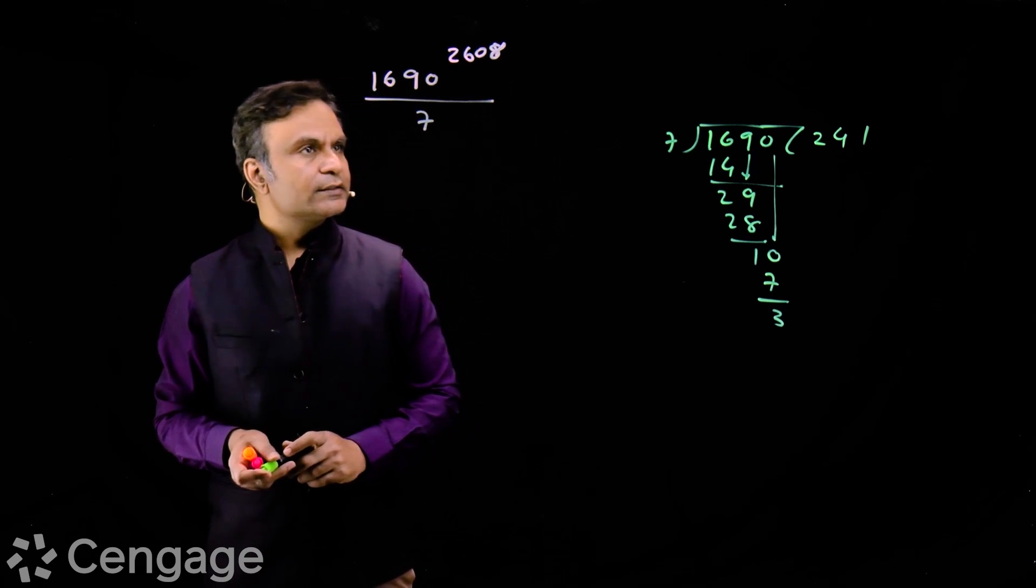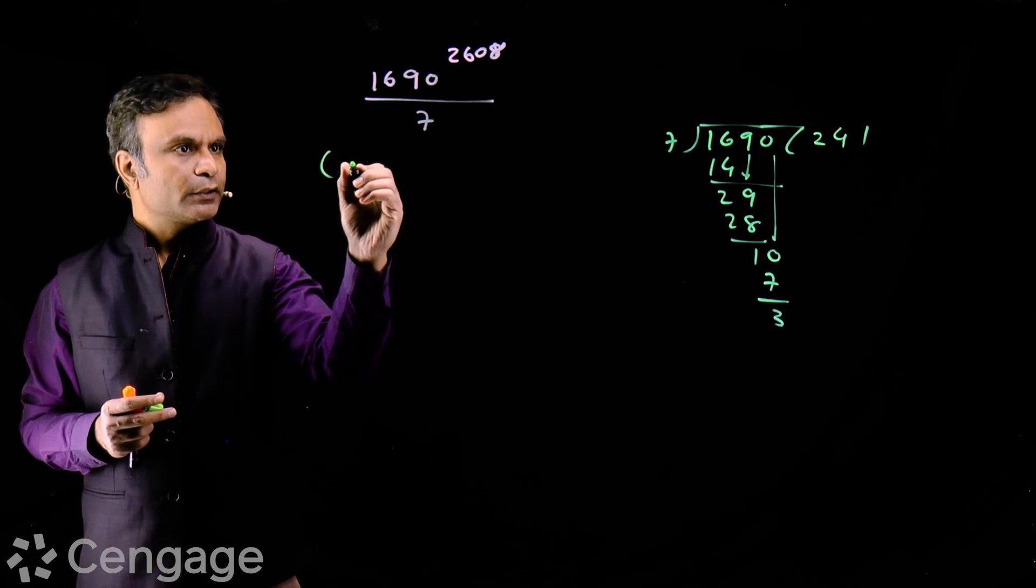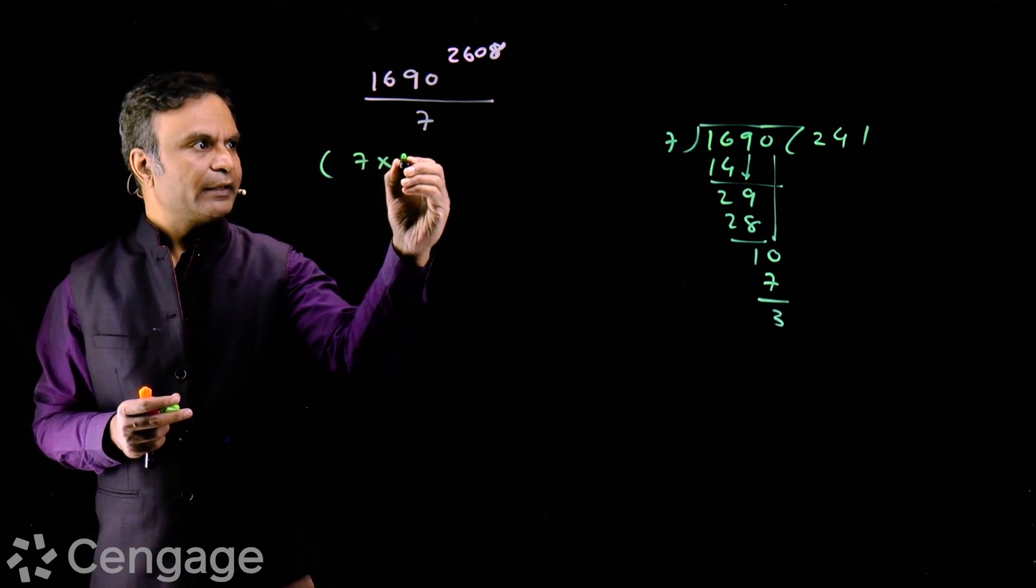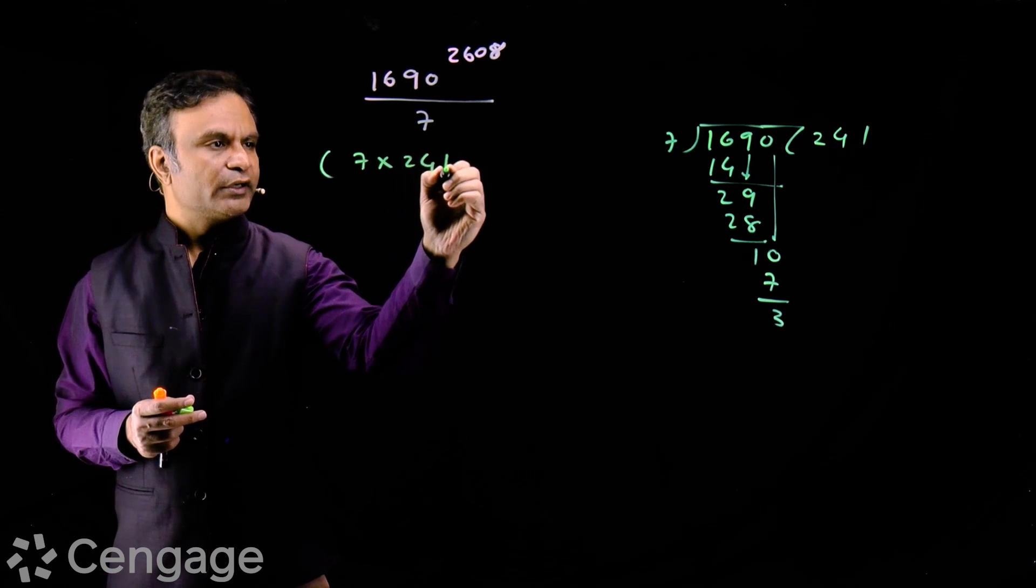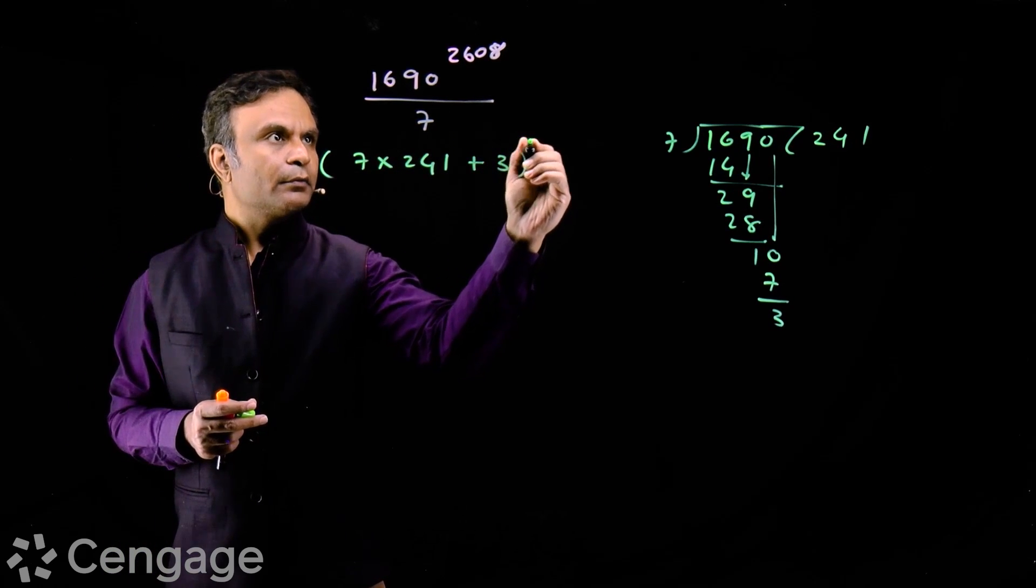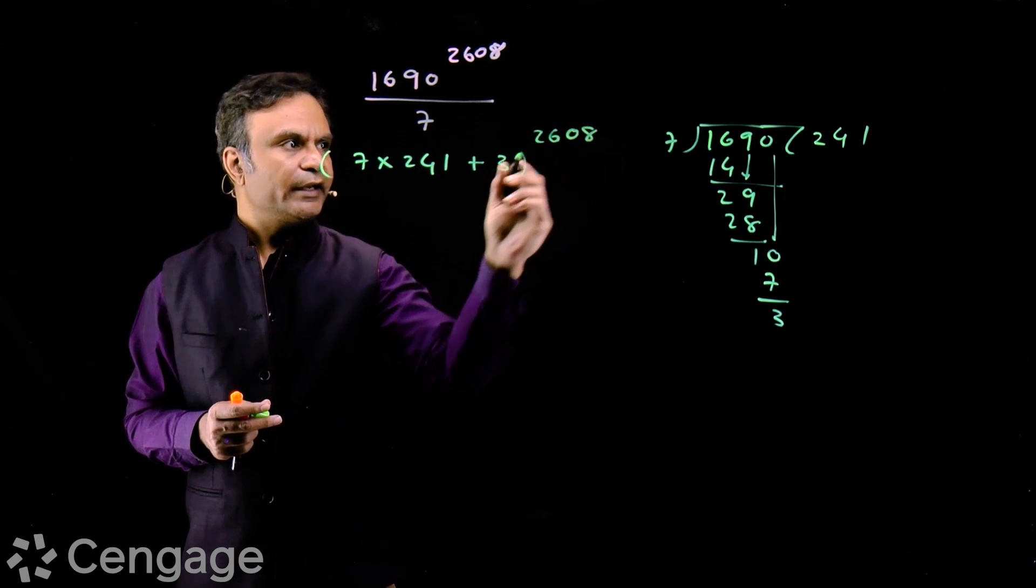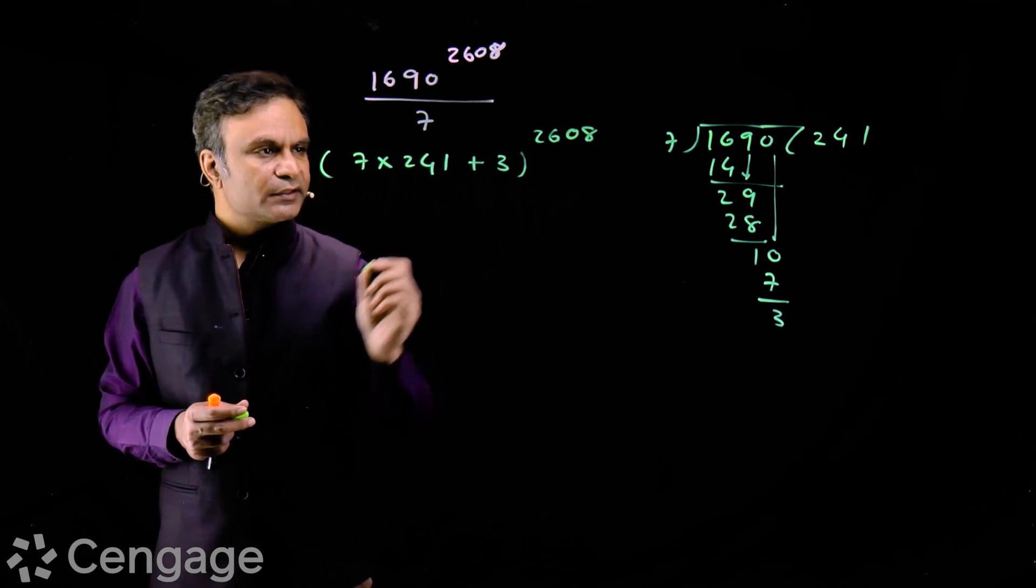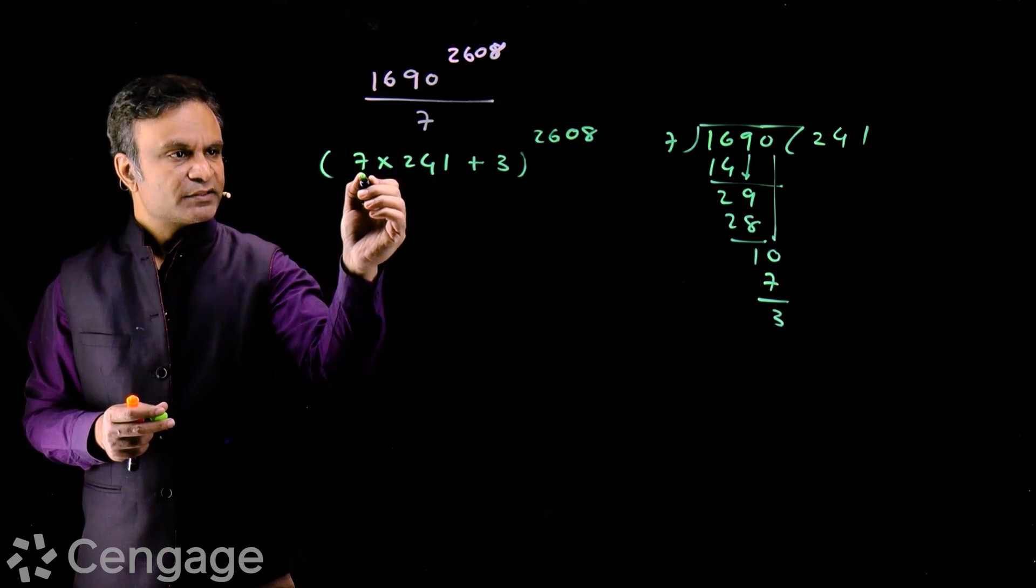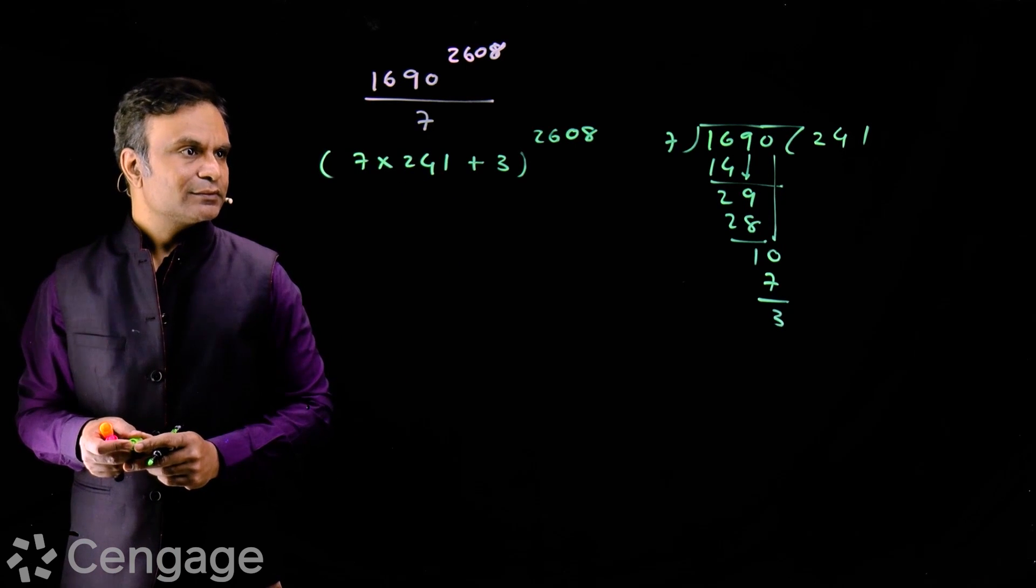That means how we write number 1690? We can write this way: 7 multiply by 241 plus 3, this power 2608. We have written 1690 this way: divisor which is 7 multiply by quotient plus 3.